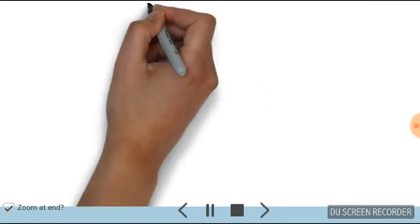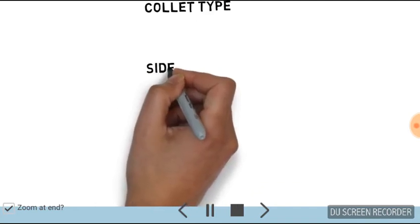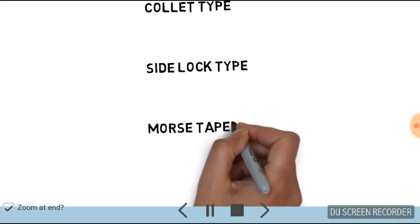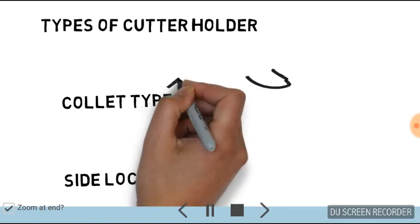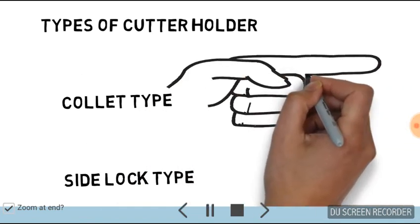the types of cutter holders. Basically, there are four types of cutter holders: collet type, side lock type, Morse taper type, and arbor type cutter holder. We will discuss each type separately.